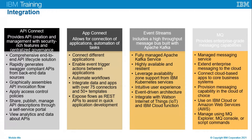The last integration option is MQ, which provides enterprise-grade messaging capabilities using point-to-point and publish-and-subscribe models to facilitate the flow of information between applications. Features include managed messaging services, extending enterprise messaging to the cloud, and connecting cloud-based apps to core business systems by integrating with existing on-premise MQ networks. You can provision messaging capabilities on IBM Cloud or Amazon Web Services, and manage it using MQ Explorer, the MQ console, or command line script commands.